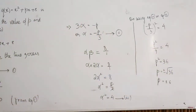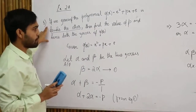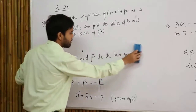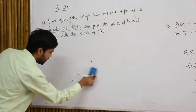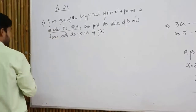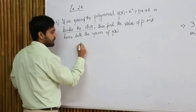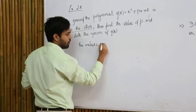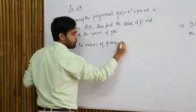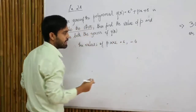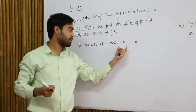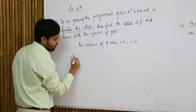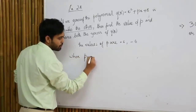The question asks me to find the value of p and also the zeros of q(x). So I have two values of p: plus 6 or minus 6. Taking different values of p gives different zeros for q(x). When p equals plus 6: